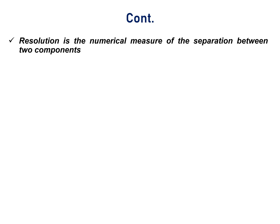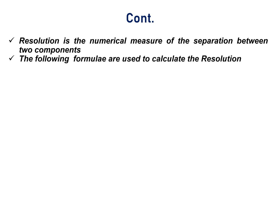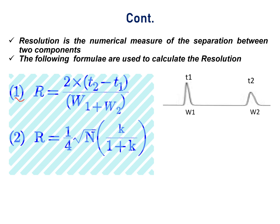Resolution is the numerical measure of the separation between two components. The following formula is used to calculate the resolution: R = 2(T2 − T1) / (W1 + W2), where T1 is the retention time of component 1, T2 is the retention time of component 2, W1 is the width of component 1 at the baseline, and W2 is the width of component 2 at the baseline.